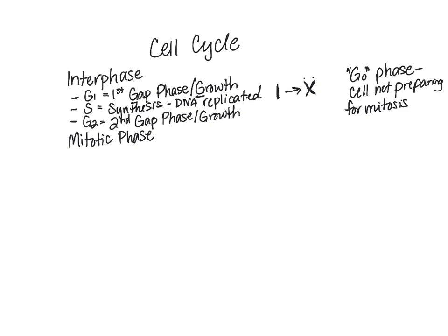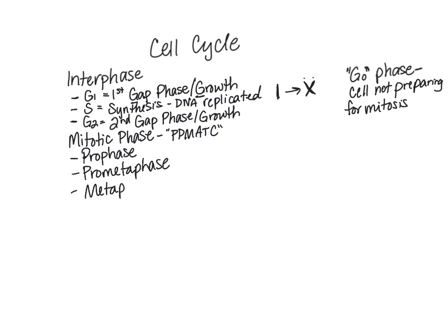Circling back to the mitotic phase, it is made up of several phases that we can abbreviate as PP-MAT-C. Those letters stand for: prophase, prometaphase, metaphase, anaphase, telophase, and cytokinesis.